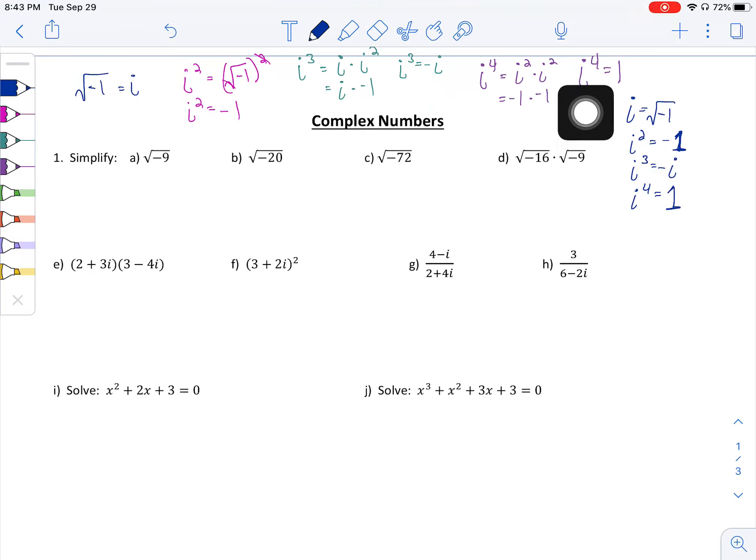So if you're asked to find, let's say, i to the seventh, you literally can just count this cycle and go back to the beginning. So one, two, three, four, five, six. i to the seventh is the exact same thing as i to the third, which would be equal to negative i.